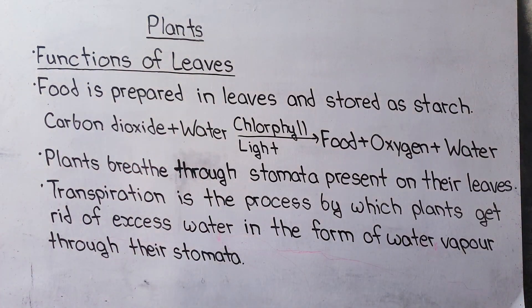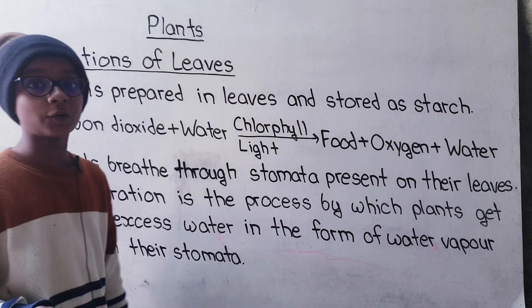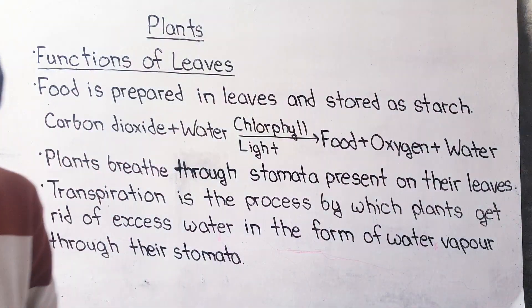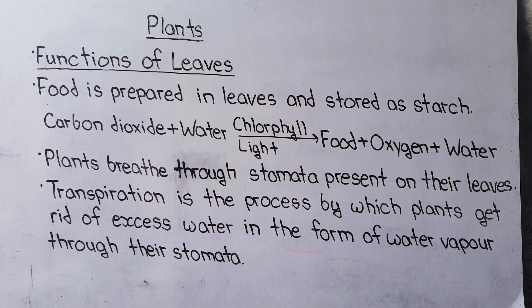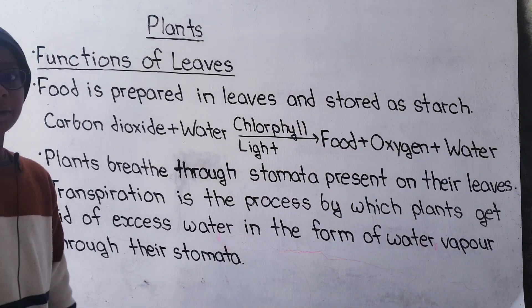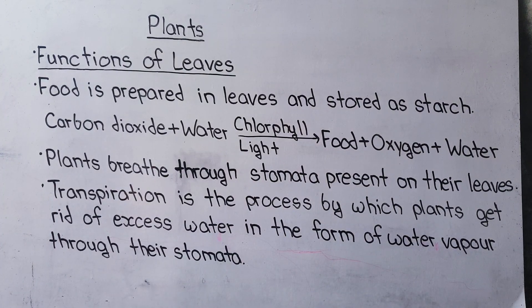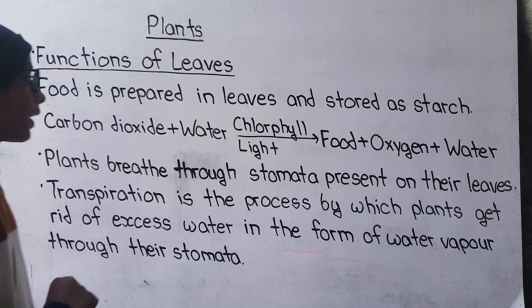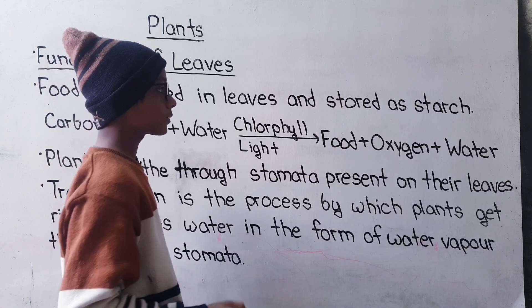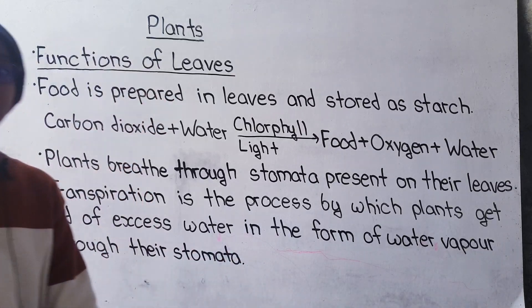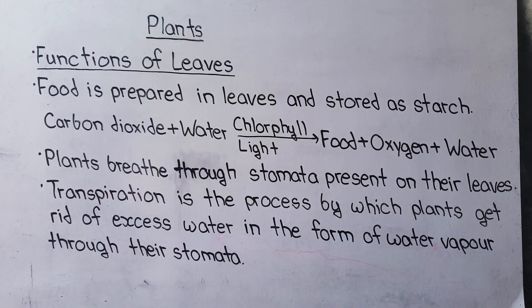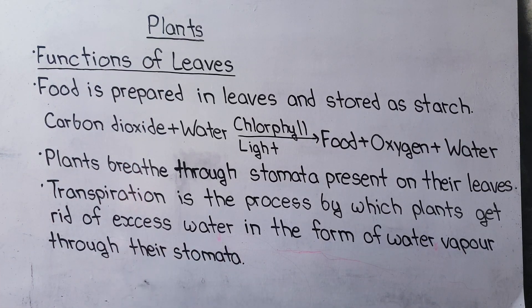Now, something that travels through the roots — those roots are called food-storing roots. Food is prepared in plants and then it is stored in starch.